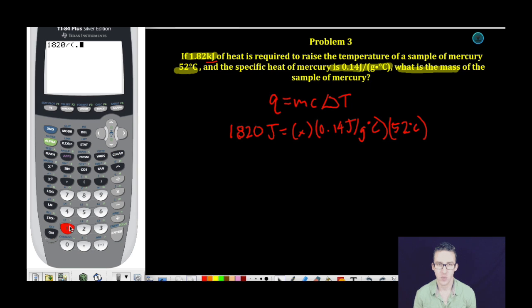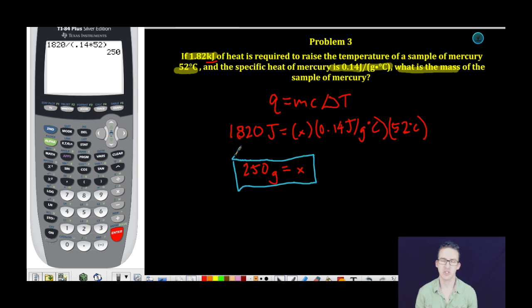1820 divided by 0.14 times 52. So the mass of my mercury sample must be 250 grams, no decimal point. I'm limited in significant figures by just the two digits in my temperature. That's my final answer and we're done.